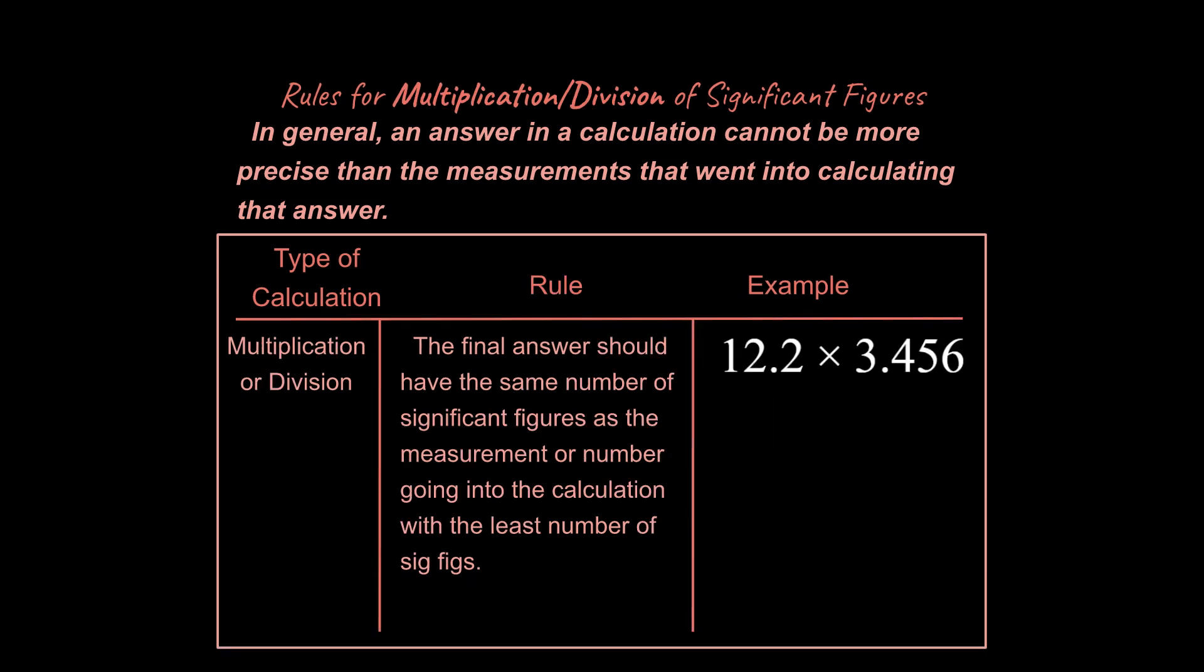Let's see what happens with multiplication and division. The rule for multiplication and division is the final answer should have the same number of sig figs as the measurement or number going into the calculation with the least number of sig figs. Again, the principle is our answer cannot be more precise than the numbers that went into that calculation. So in this case, we're not worrying about how many numbers we have to the right of the decimal place at all. We're just worrying about how many sig figs we have with each of the numbers that we are multiplying together. So on the left we have three, on the right we have four sig figs. So between three sig figs and four sig figs, which is our least precise value?